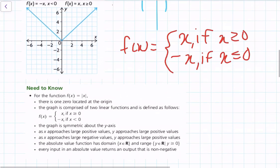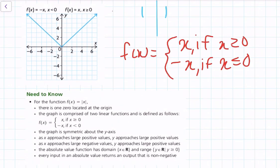Let's look at some important parts of this graph. There is one zero located at the origin. The graph is comprised of two linear functions. The graph is symmetric about the y-axis — if I draw the axis of symmetry and fold the graph over, the two lines of the function would match up.